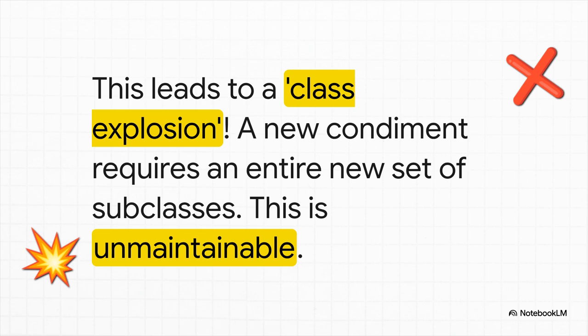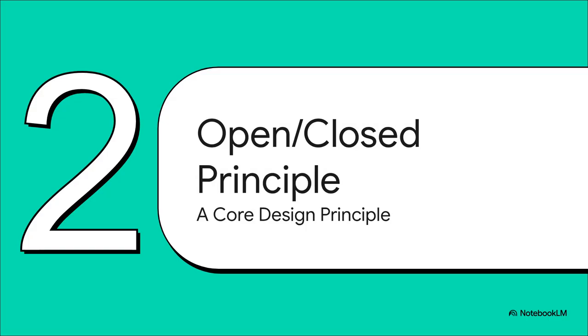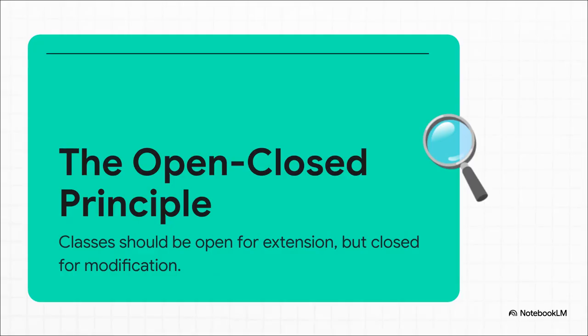Before I show you the beautiful solution to this, we have to talk about one of the most important principles in all of software design — a philosophy that helps us build flexible, resilient systems instead of rigid, brittle ones. This is the open-closed principle. Our code should be open for extension, meaning we can add new functionality to it, but it should be closed for modification. We shouldn't have to crack open existing, tested, working code just to add a new feature.